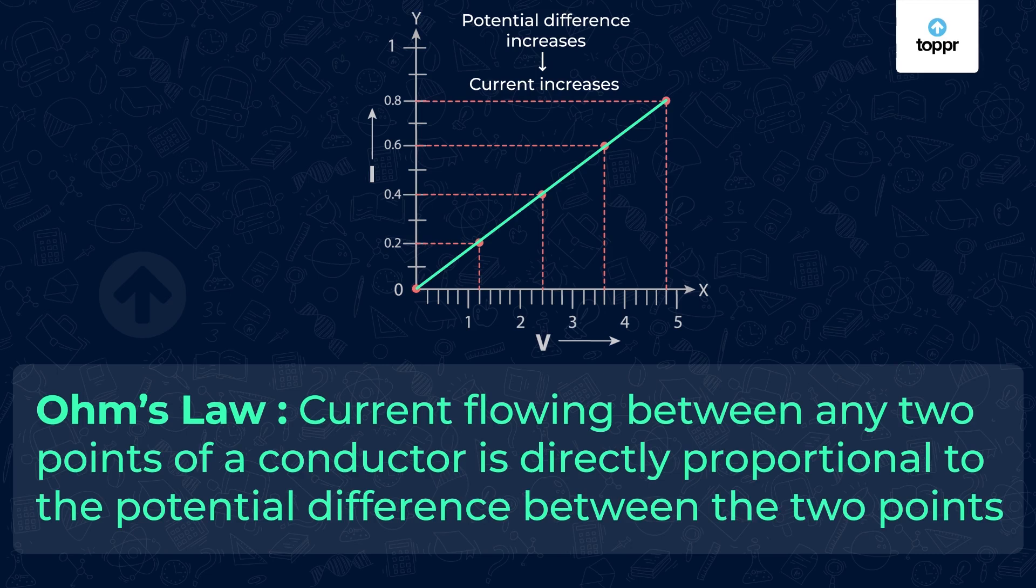We saw it for the bulb. This is also true for the wire or any other device. Remember, physical conditions such as temperature should not change. If the temperature of the device is not the same in the two measurements, you might see a difference in reading.